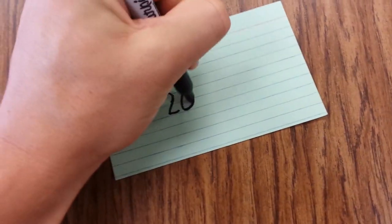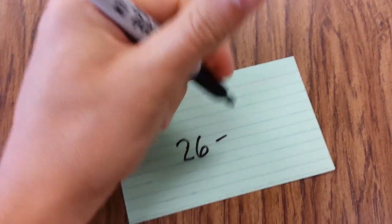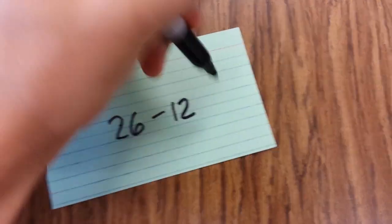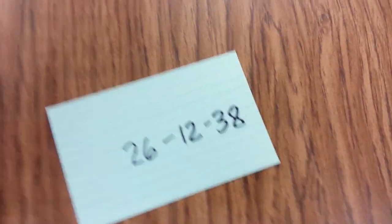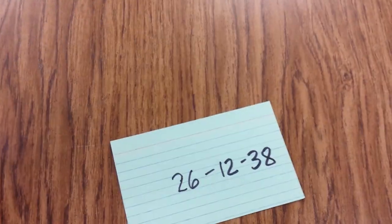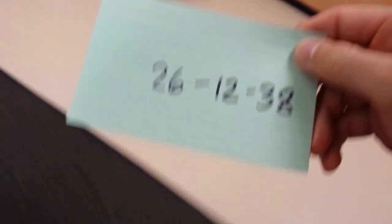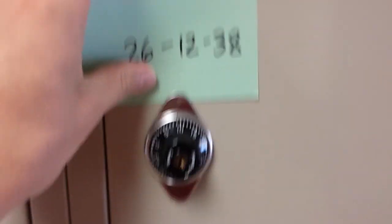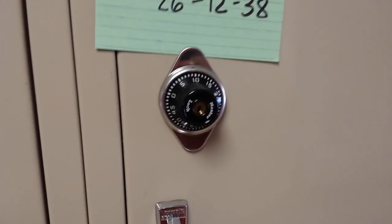26, 12, 38. Okay, so you're going to get three numbers and I'm going to take this and I'm going to go out and show you how to do it. So I'm going to go to this locker here, I'm going to stick it right there so that I know and I'm prepared. So here we go.